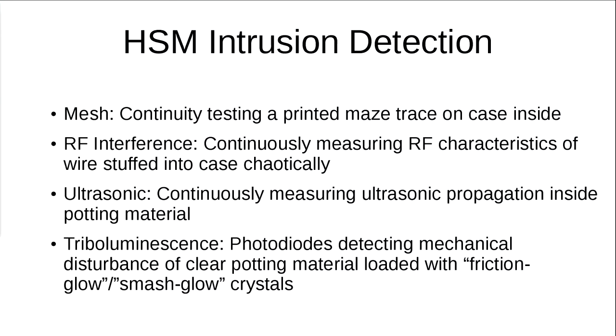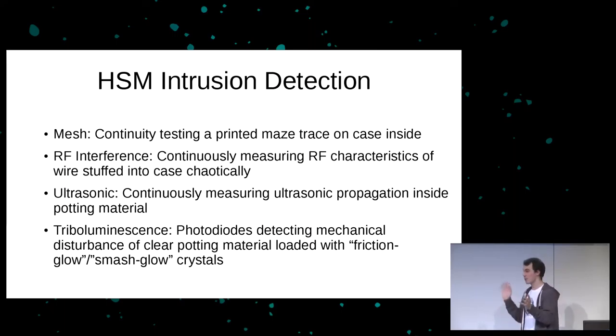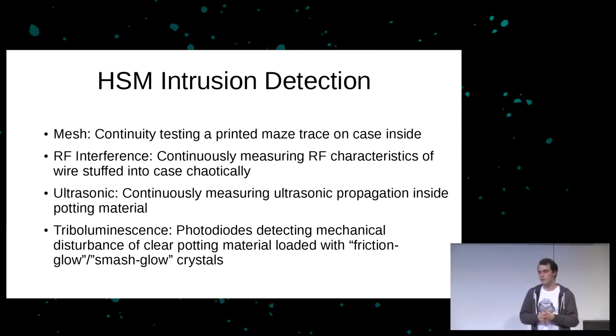There are a couple of other things I'd like to try. One is RF interference: you have a metal can instead of a plastic case with wire randomly stuffed into it so you can't predict where the wire is, then potted. You continuously measure the frequency response of different wires and traces within the case — the coupling between them — and measure when that significantly changes. Whether that works in practice, I don't know. It would probably be pretty expensive, but might be worthwhile to explore.